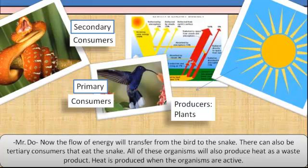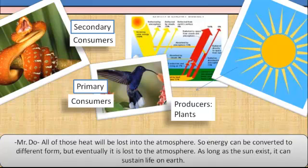All of that heat will be lost into the atmosphere. So energy can be converted to different forms, but eventually it will be lost to the atmosphere. As long as the sun exists, it can sustain life on Earth.